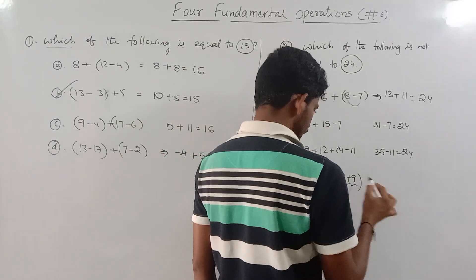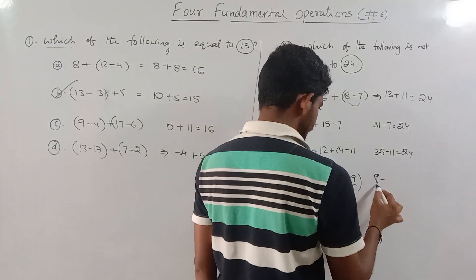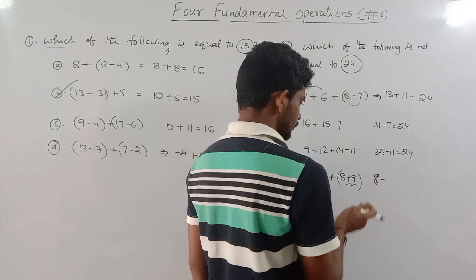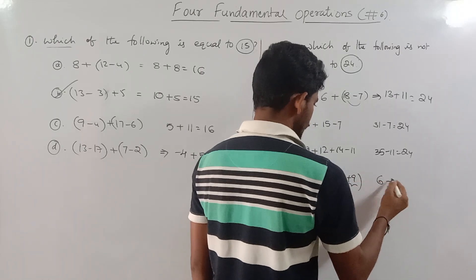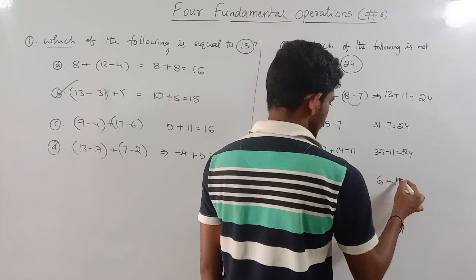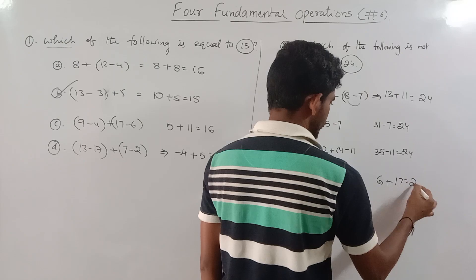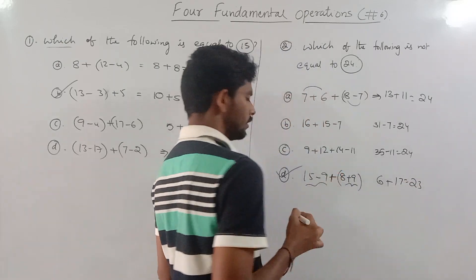So 50 minus 9 plus 8 plus 9: 8 plus 9 equals 17, so that does not equal 23. That is D — option D is the correct answer.